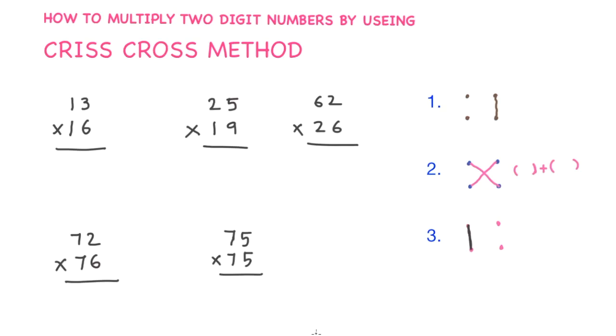How to multiply a two-digit number by using criss-cross method. 13 × 16.